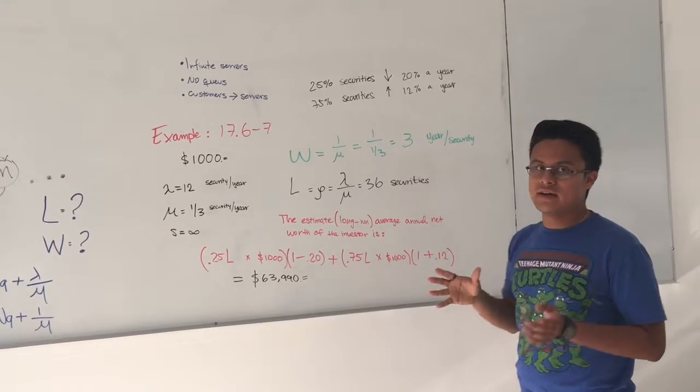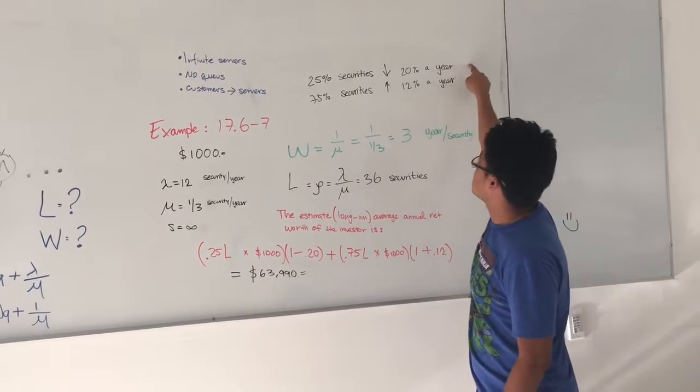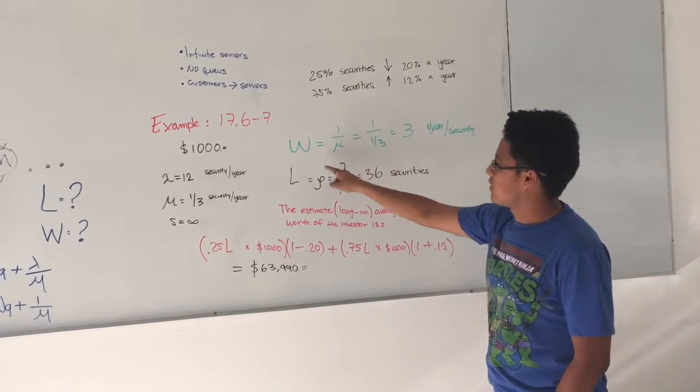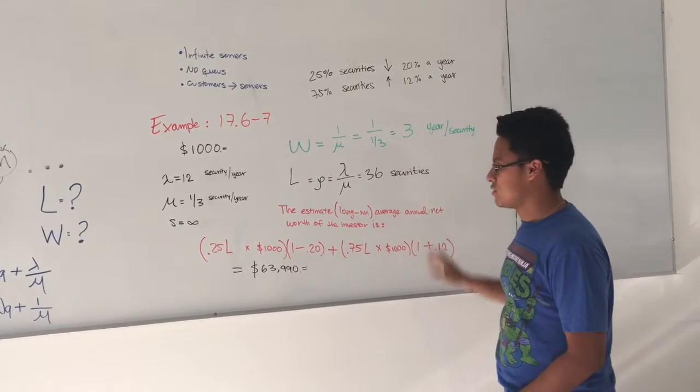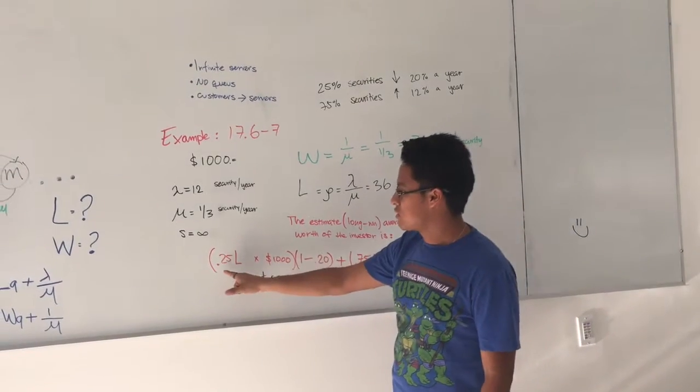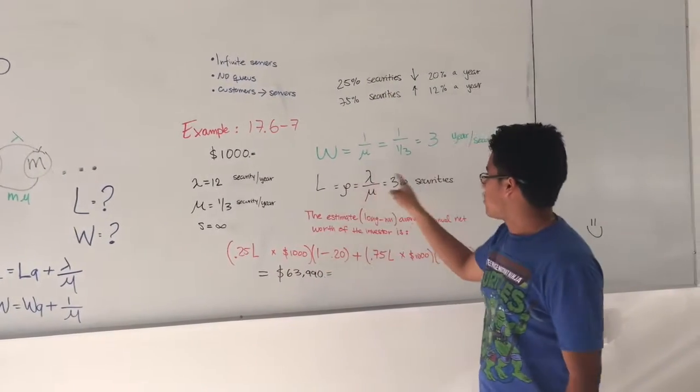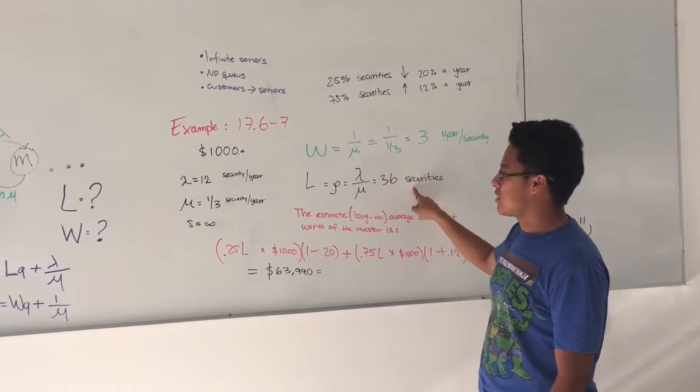Knowing this is just an addition of these securities and these securities times the securities that are in the system. So we construct the equation over here. It's going to be the 0.25% of the securities that you have times the number of securities you do have, that is 36 over here,